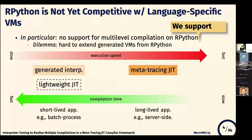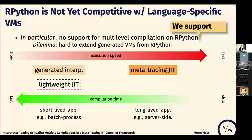RPython should also support multiple compilation, but currently does not. Currently, RPython is not yet competitive with specific production VMs. To improve the overall performance of RPython, we think supporting multiple compilation by adding lightweight compilation to RPython is needed.